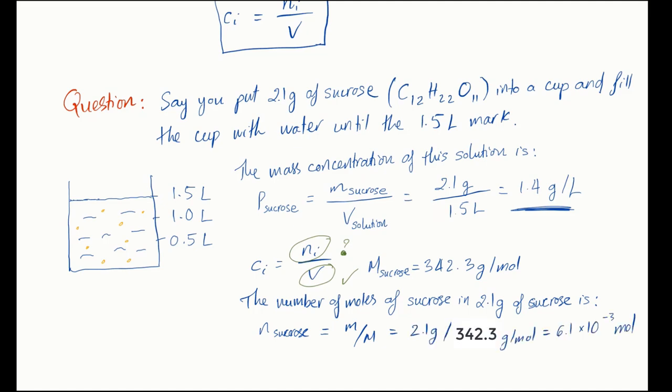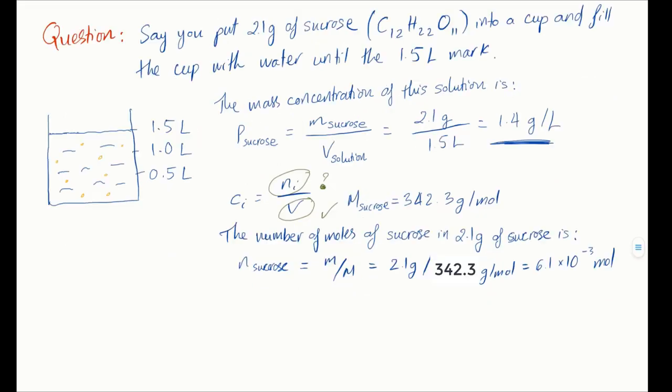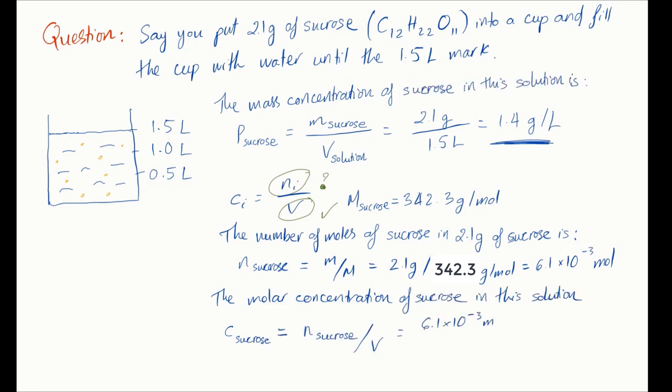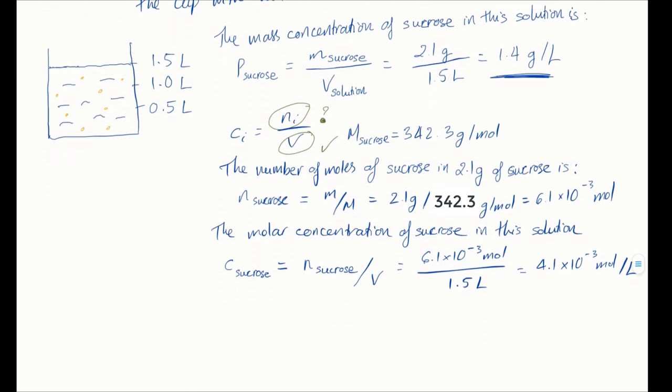So we got our number of moles of sucrose. Now we have all the ingredients that we need to calculate the molar concentration of the sucrose solution that we made. C equals 4.1 times 10 to the negative 3. And the unit, as you can see from the calculation, is moles divided by liters, so the unit is mole per liter.